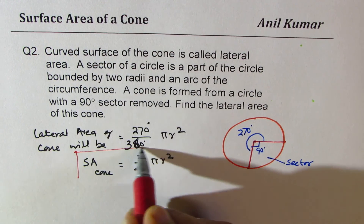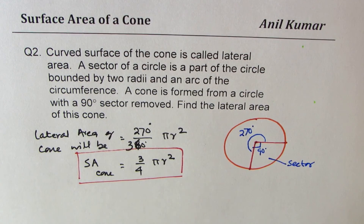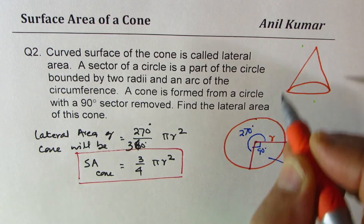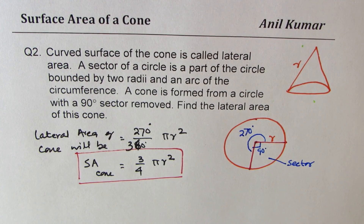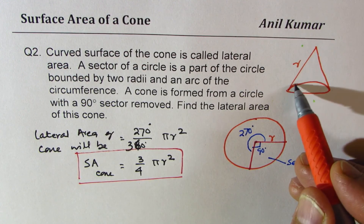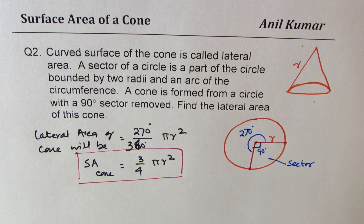That is how we answer question two. We are only talking about lateral area — the curved surface area — not the bottom circular base. This is a basic concept question, and we will take a few more practice questions based on this. I hope you understand. Feel free to write your comments, and if you like and subscribe to my videos, that'd be great. Thanks for watching!